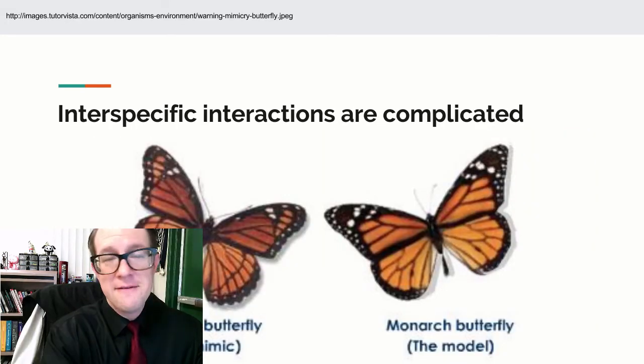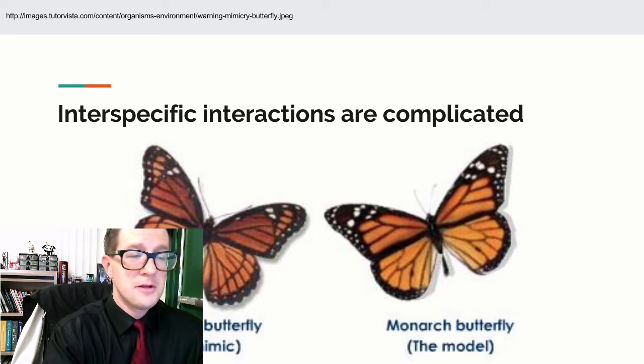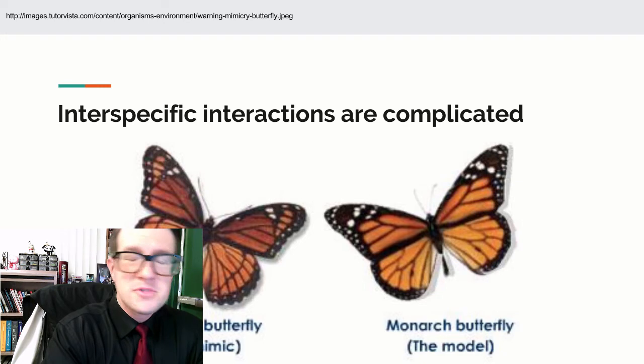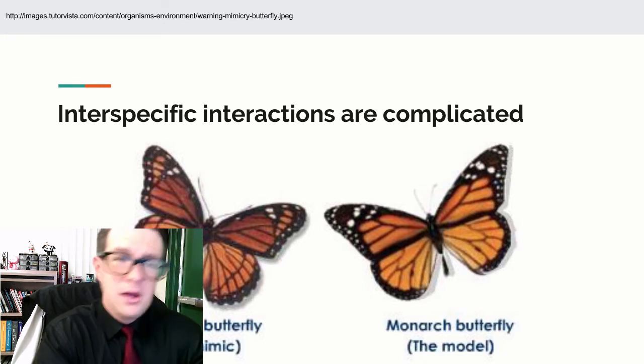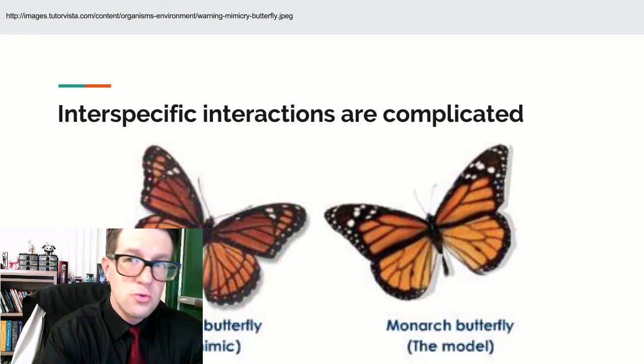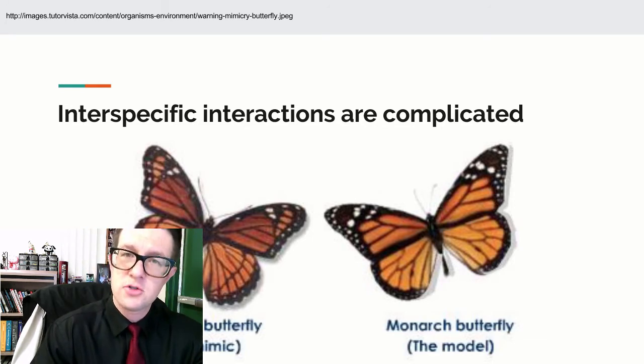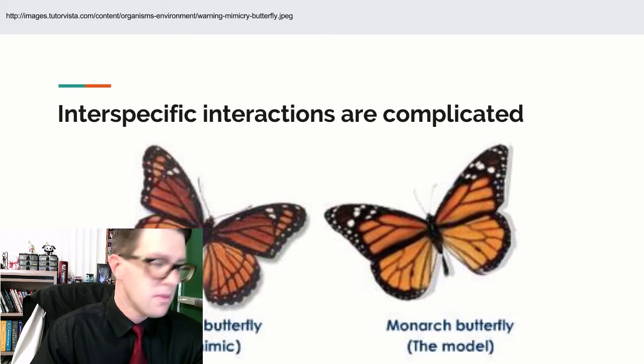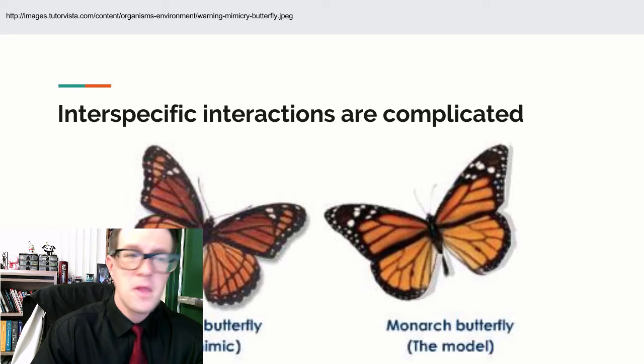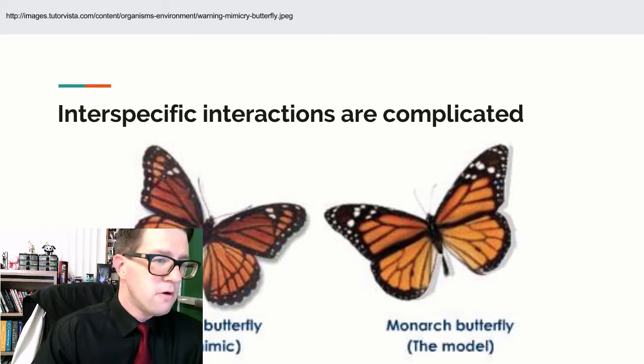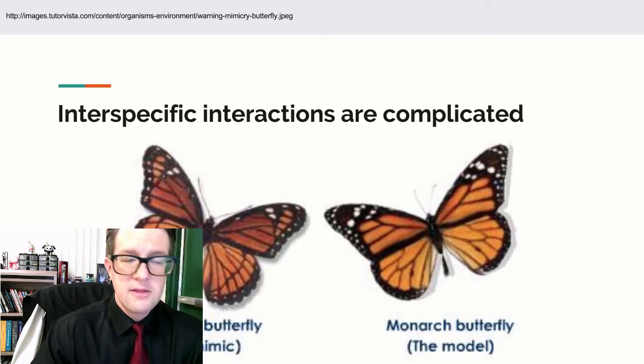When we have interspecific interactions, what you can deal with are situations of mimicry, meaning you have one organism trying to look like another. In this particular case here, the one on the right, the monarch butterfly is toxic. So if you consume it, it's going to poison you. The one on the left, the viceroy butterfly, isn't toxic. But it evolved to look like the monarch butterfly. By chance, it happens to look like it.